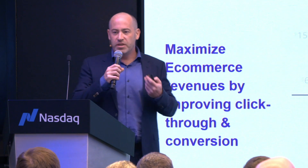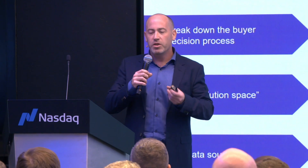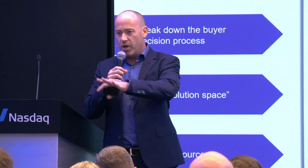Once we've defined the problem we want to solve, the next step is to put structure on this. There are really three main reasons. First, we have to understand the decision-making process of the problem we're trying to solve — without that there's very little we can do. Second, we have to define what we call the solution space: identify all the elements we can actually control and how. Third, we have to match data to the specific areas we're investigating and identify all the data sources — within the organization, from the e-commerce platform, or that we collect ourselves — that are critical to solving this puzzle.